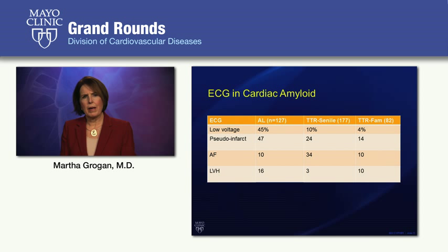In transthyretin amyloid of the senile type, only 10% of patients had low voltage, so it's important to recognize that distinction. ECG criteria for left ventricular hypertrophy was actually present in about 16% of patients with AL amyloid. So normal voltage or even LVH criteria do not exclude the diagnosis of cardiac amyloidosis.